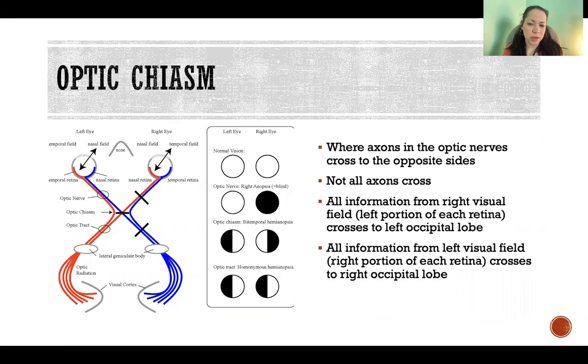Now what's interesting is not all of the axons cross over. So it's not like everything from the right eye goes to the left occipital and vice versa. That is not the case.